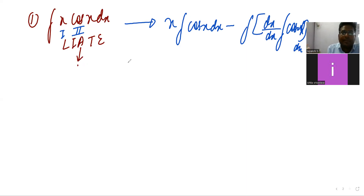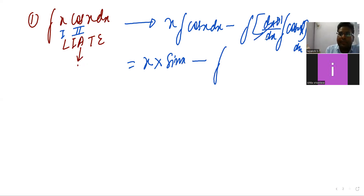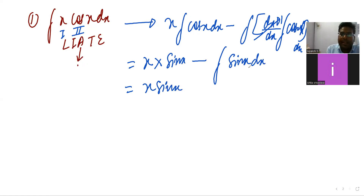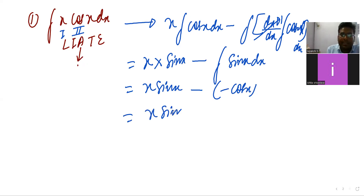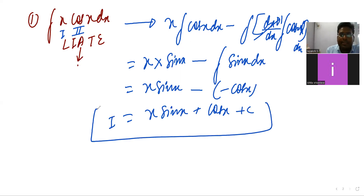So the next step: x times integration of cos is sin, so it is x·sin(x), minus dx/dx is 1, so integration of cos gives sin(x). The answer is x·sin(x) minus (minus cos x), which is x·sin(x) + cos(x) + C. This is the integration value.